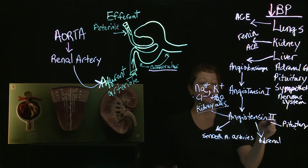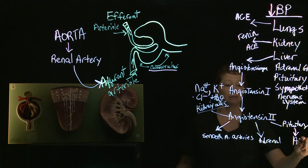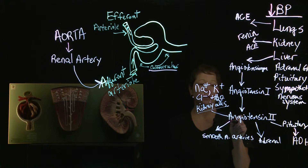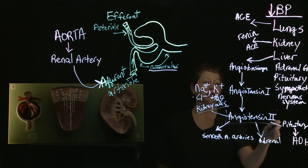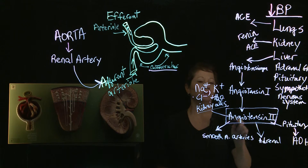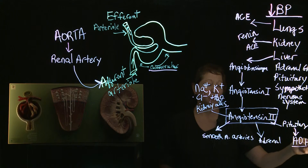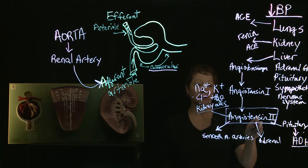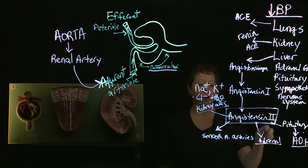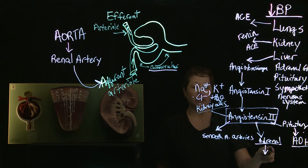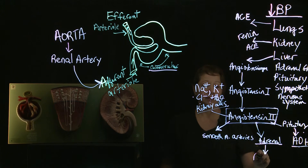In the pituitary, angiotensin II causes the release of antidiuretic hormone, and we do want you to know this. Angiotensin II is a key compound in the regulation of blood pressure via the kidneys — how it affects the pituitary and what hormone is secreted, how it affects the adrenal gland, and what compound is secreted as a result. The compound excreted by the adrenal cortex specifically is aldosterone.